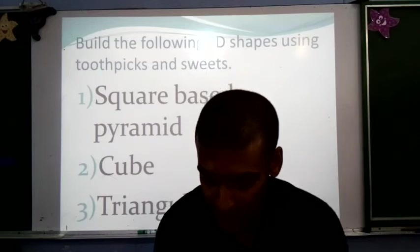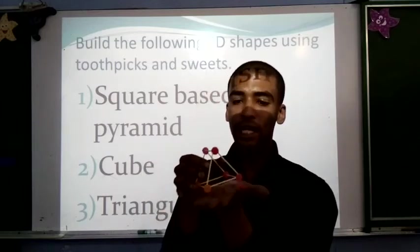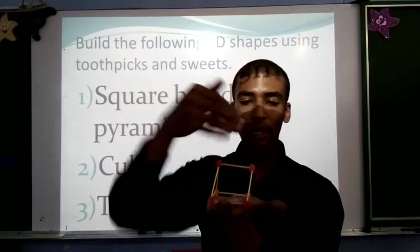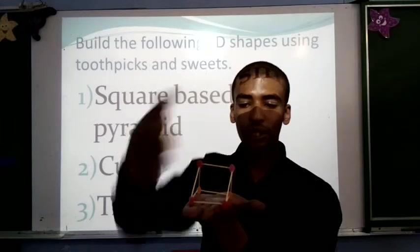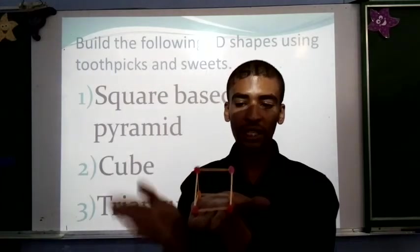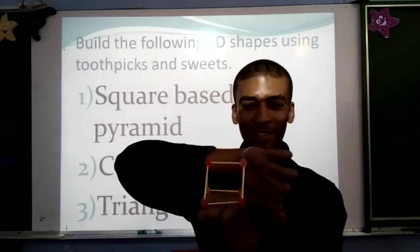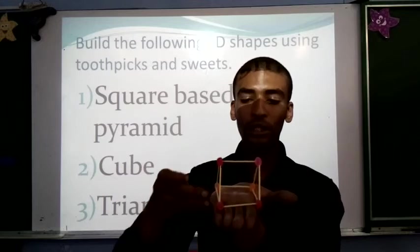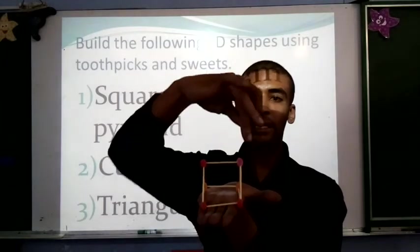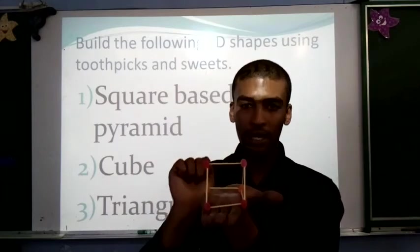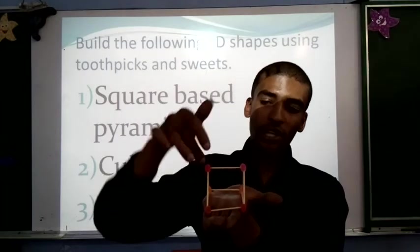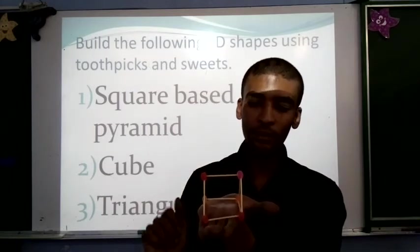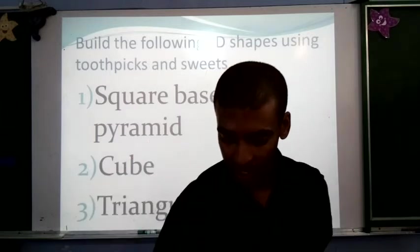Our final one that we're going to look at is our triangular prism. How many faces does it have? Going all the way around, we've got 1 at the back, 2, 3 at the bottom, along the sides, 4 and 5. How many toothpicks did we use, or edges, do we have? We have 1, 2, 3, 4, 5, 6, 7, 8, 9. Finally, our jelly tots, or our vertices. 1, 2, 3, 4, 5, 6 vertices.